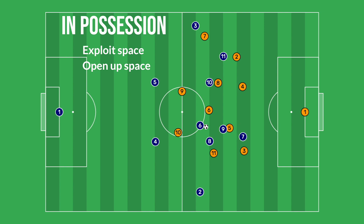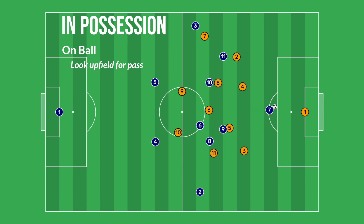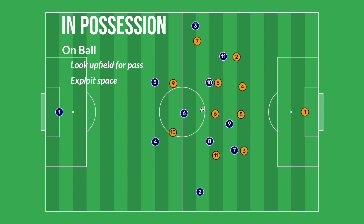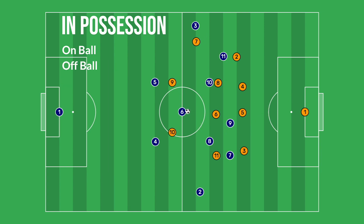The player on the ball's first look should be for a teammate up the field in open space. After that, the player on the ball needs to try to see if they can exploit any space for themselves. The more complex situation comes during the majority of what a player has to deal with: moving off the ball.